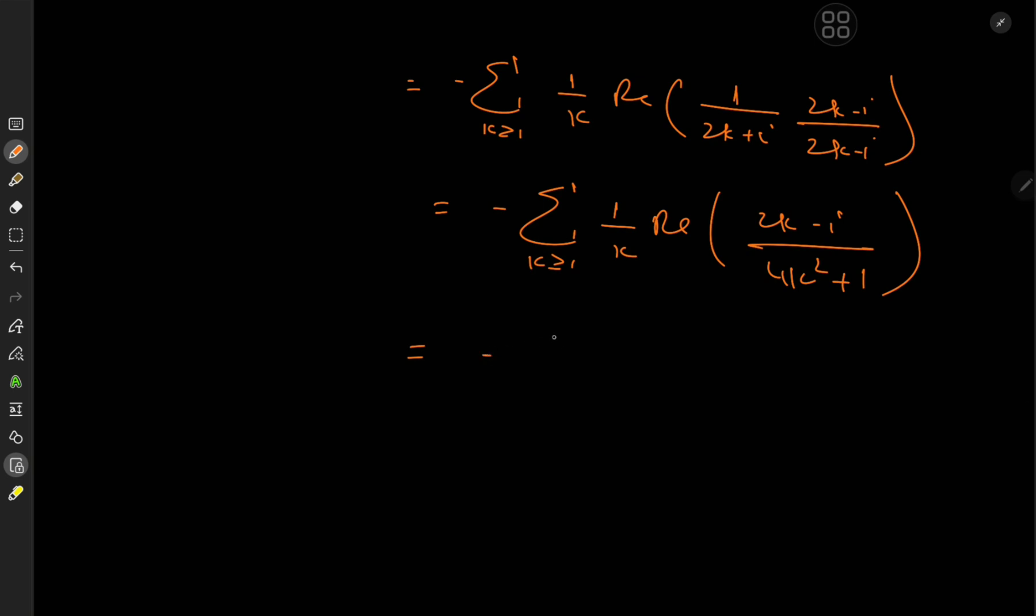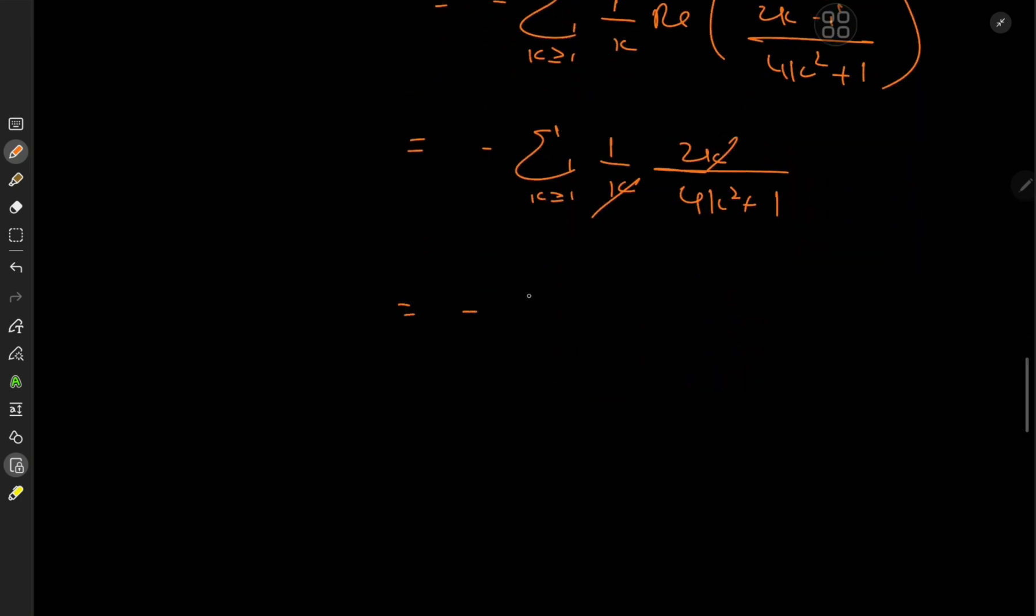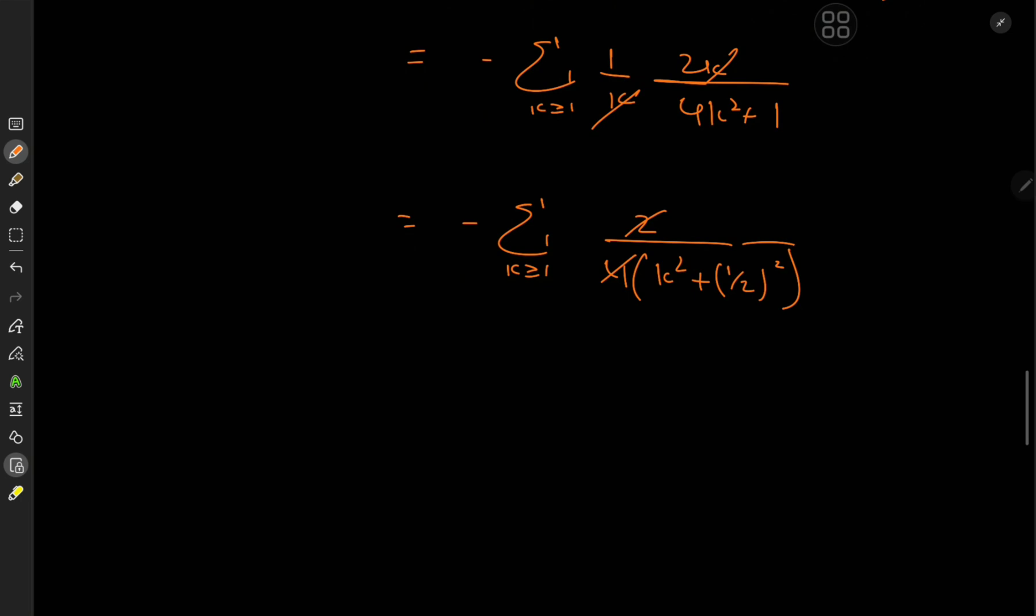So what we're left with is negative sum over k 1 over k times 2k over 4k² plus 1. We have some lovely cancellation and now we are left with the negative of the sum over k of 2 over 4k² plus 1. And we could just factor out 4 from here so that we have 1 half squared and that looks quite nice. And also it gets rid of the factor of 2 upstairs. So all we need is negative 1 half sum over k of 1 over k² plus 1 half squared.